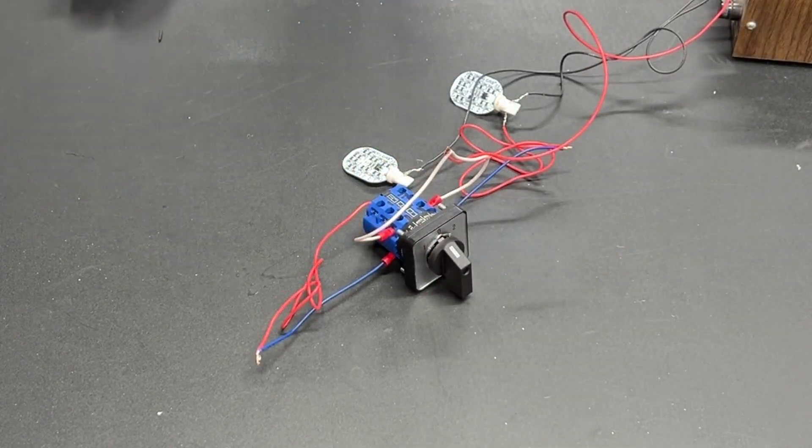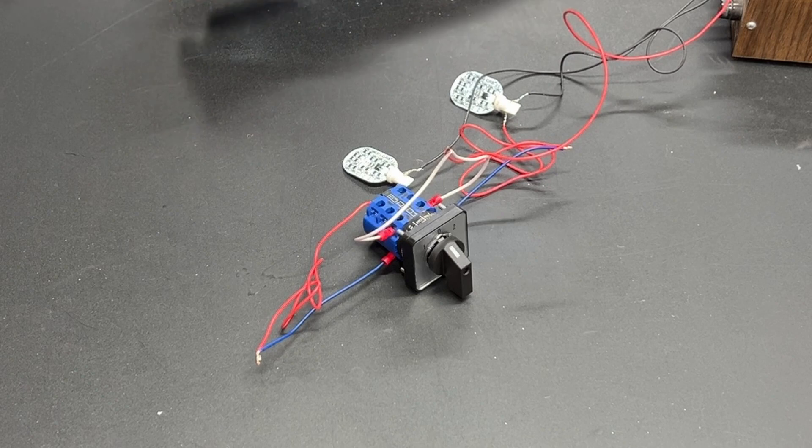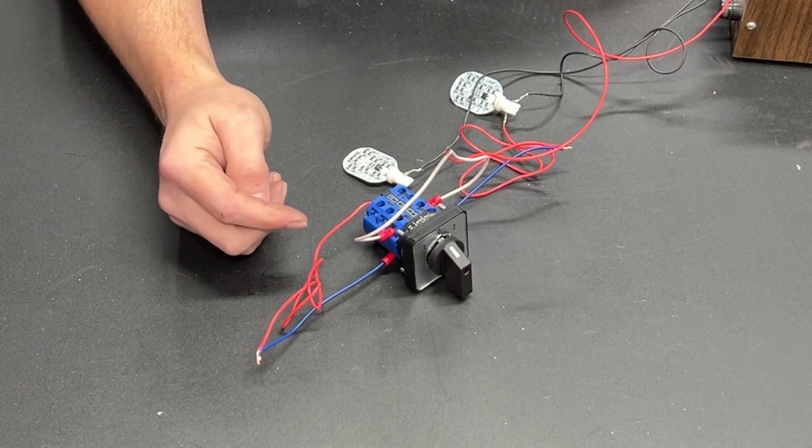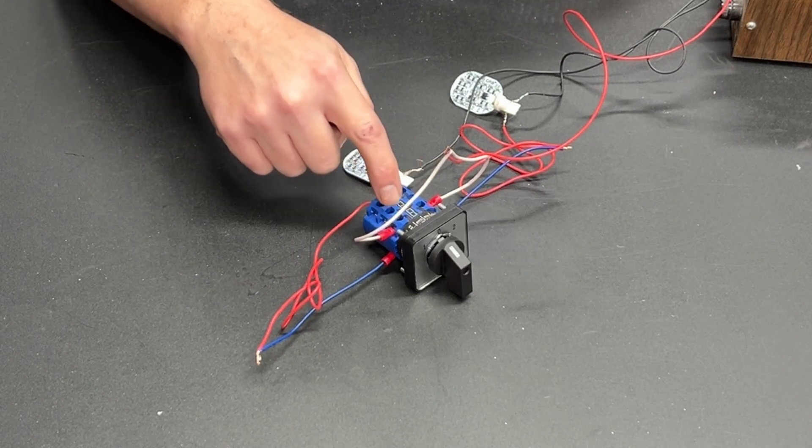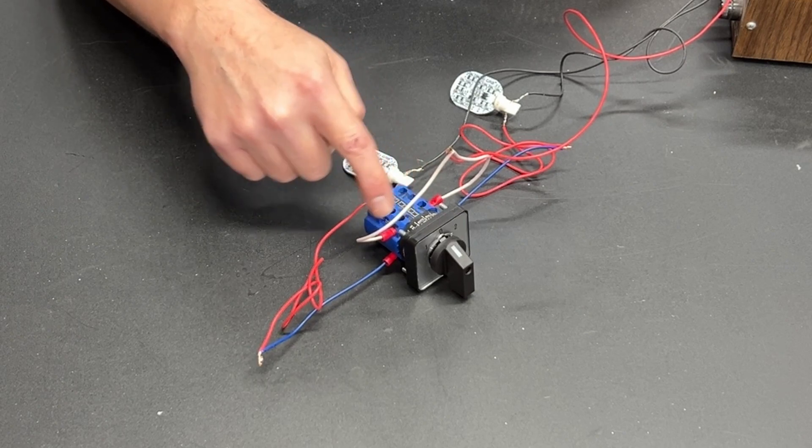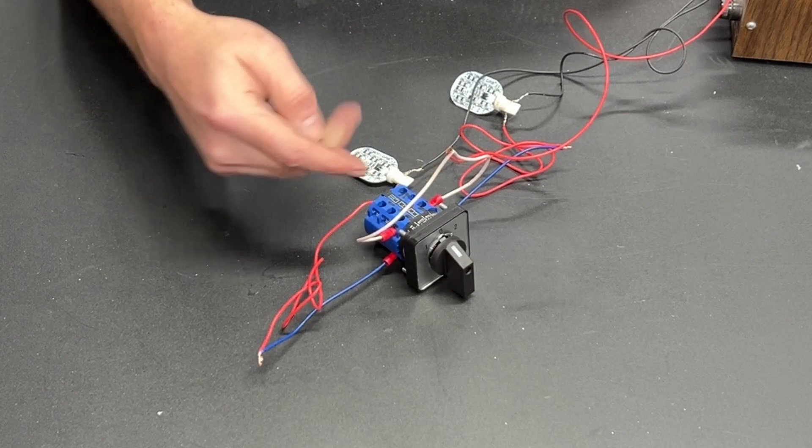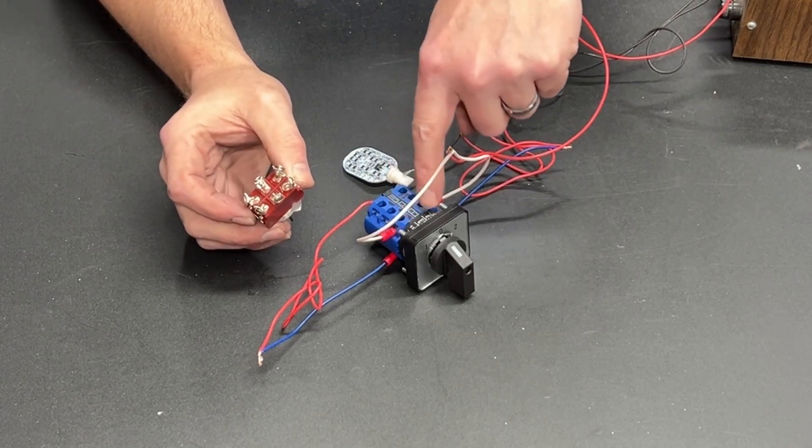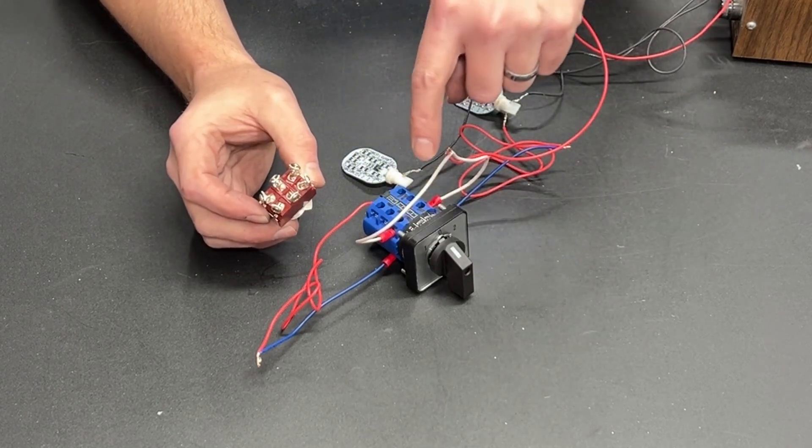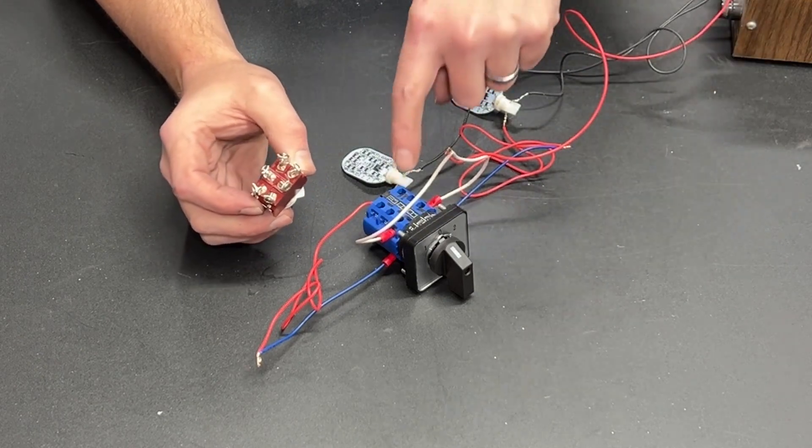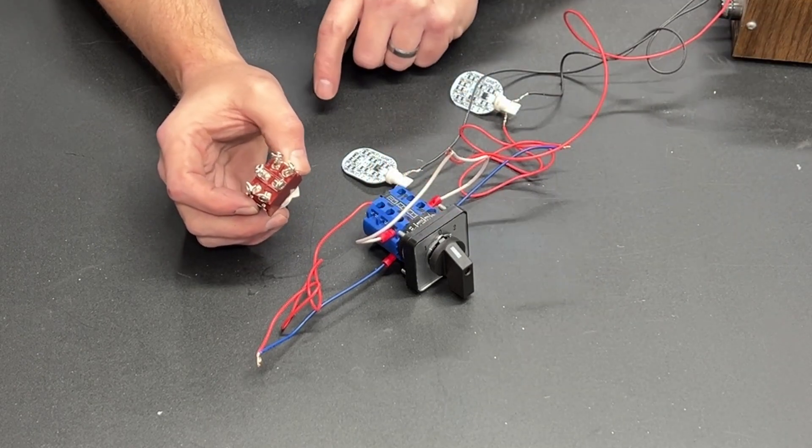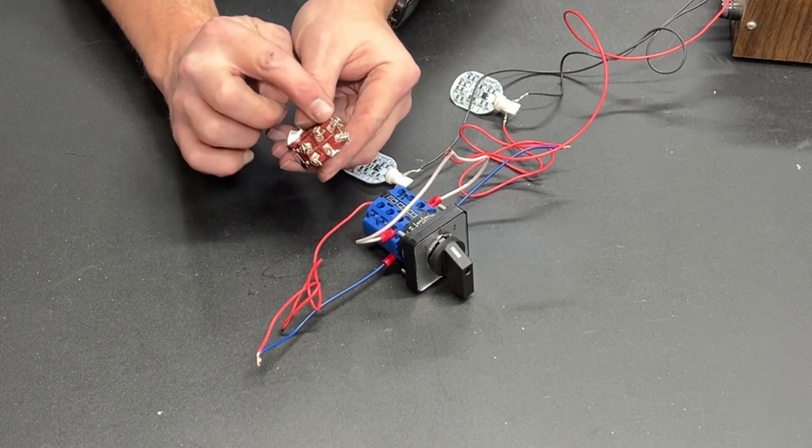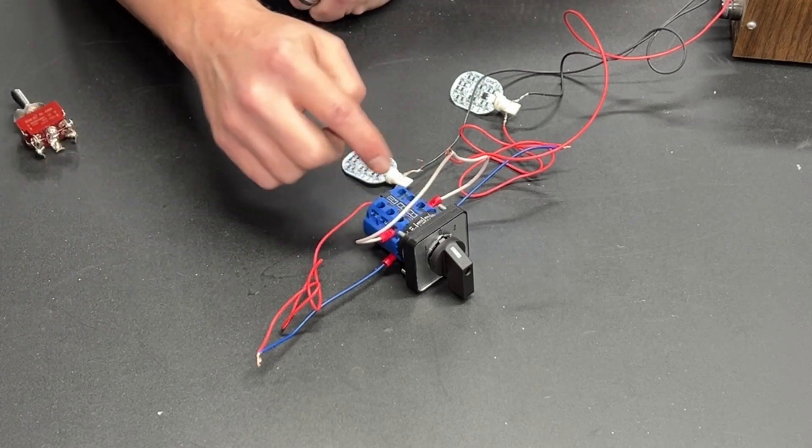Now why is this important? Well if you need a double pole double throw, you connect this one to this one and this one to this one and you now have two banks of switches that are working just like this guy right here. These two would be a common and that's one switch and then the next section of your changeover switch would be the other row right there. So you would have a double pole double throw.